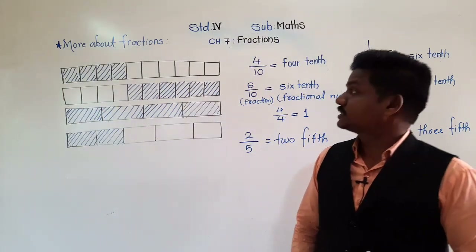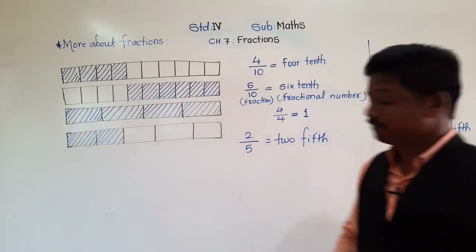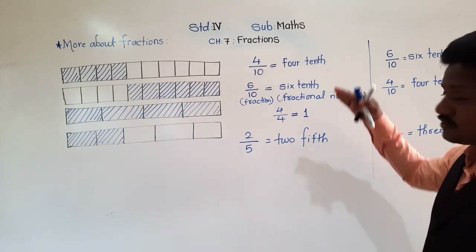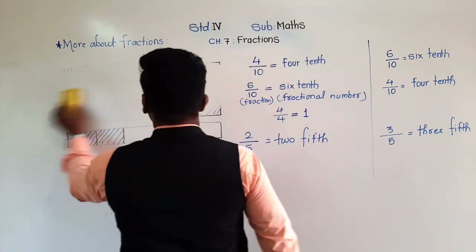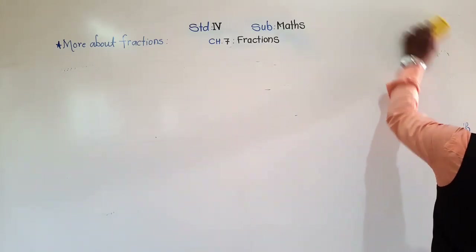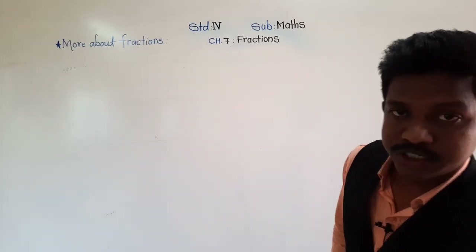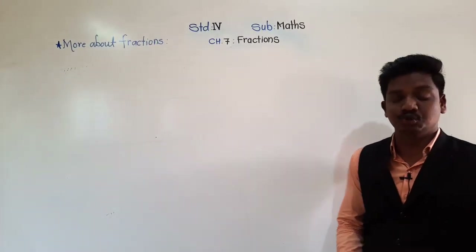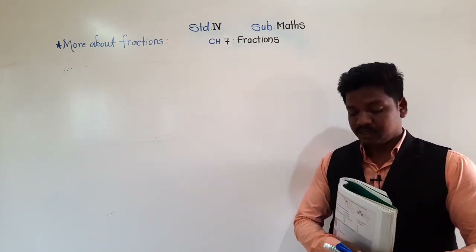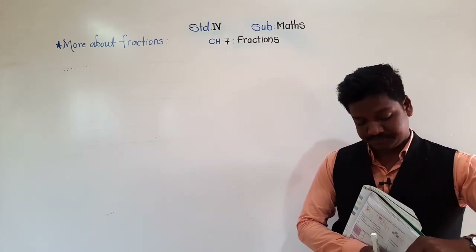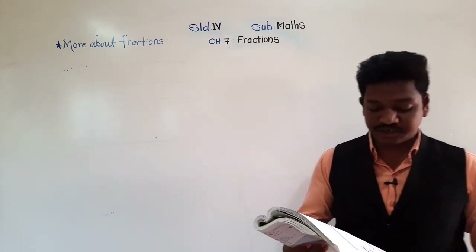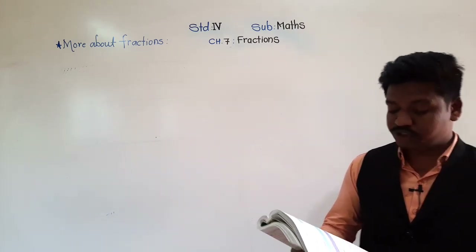Let us solve Practice 7.1, which is based on this concept. You don't need to write the strip explanations — just understand the concept. Now see Practice 7.1: open your textbook to page number 102, Practice 7.1. You have to write your answers there only. See, the first question is: write the fraction which represents the shaded portion in each figure.